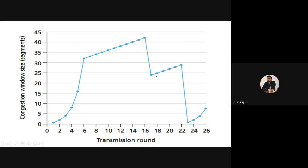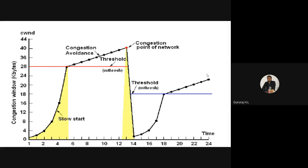For example, if the congestion window was around 42, it immediately dips to approximately 24 — half of the previous value. After that, it goes back to linear growth, entering the Congestion Avoidance phase again. So initially we have the Slow Start phase with exponential growth, then once it reaches the threshold value it goes to linear increase in the Congestion Avoidance phase.